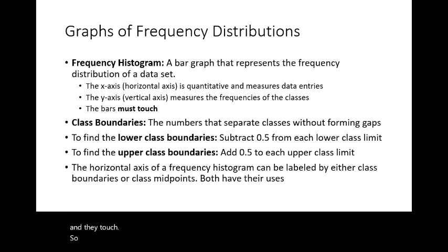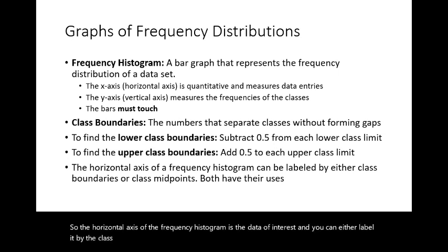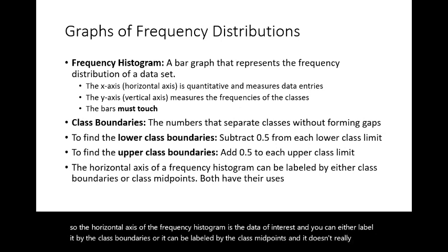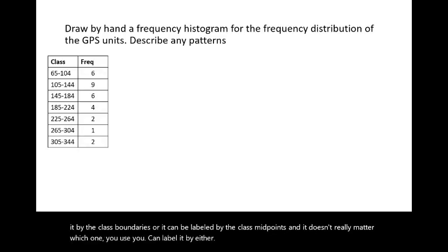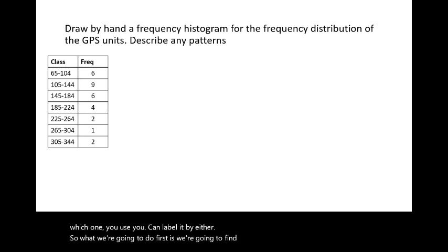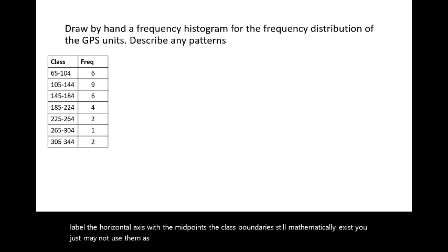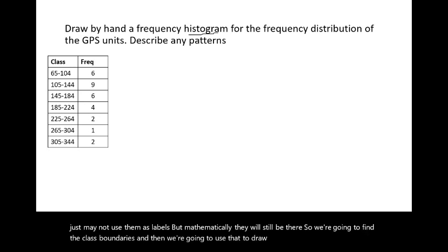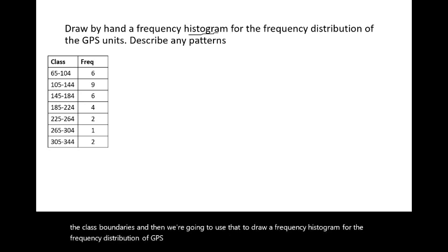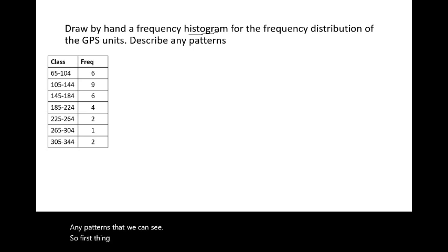The horizontal axis of the frequency histogram can be labeled with either the class boundaries or the class midpoints — it doesn't matter which you choose. Even if you label with midpoints, the class boundaries still mathematically exist. We will find the class boundaries and use them to draw a frequency histogram for the GPS data.